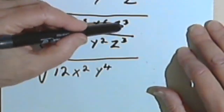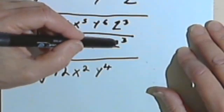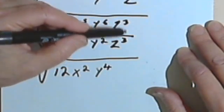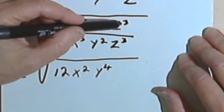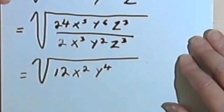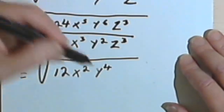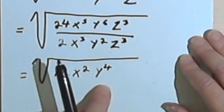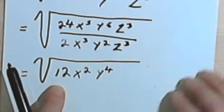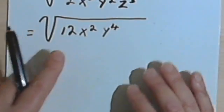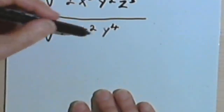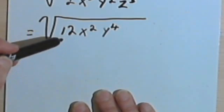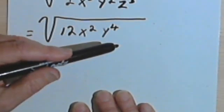We have z to the 3rd over z to the 3rd. Well, subtracting the 3 from the 3 gives me 0, z to the 0, and any number to the 0 is 1, which I don't have to write at all since there's no sense in multiplying this by 1. It'll just remain the same. Now all I have to do is take the square root of this expression, 12 x squared y to the 4th.